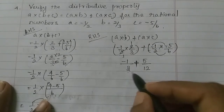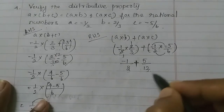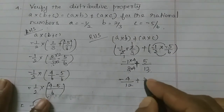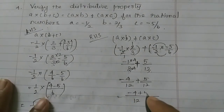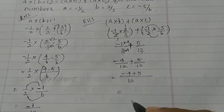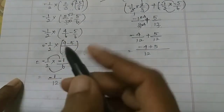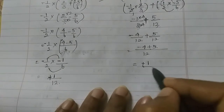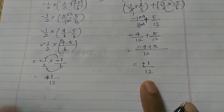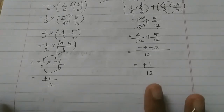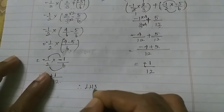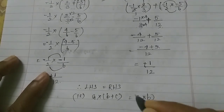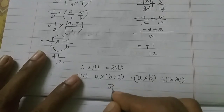The LCM of 12 is used: 3 times 4 equals 12. So minus 4 by 12 plus 5 by 12. Taking 12 as common: minus 4 plus 5 equals 1, so the result is 1 by 12. Note: minus into minus is plus, so 5 minus 4 is 1, giving 1 by 12. Both sides equal 1 by 12, so the distributive property is verified for rational numbers. Therefore, left hand side equals right hand side: A into B plus C equals A into B plus A into C. Hence verified.